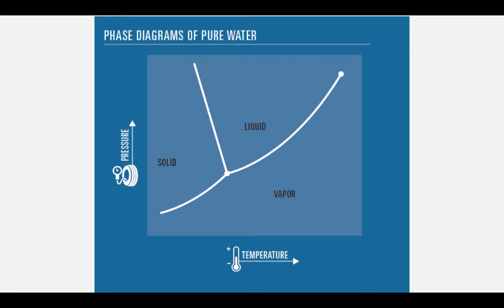Here is a phase diagram of water. Let's start here to discuss how phase diagrams work. All phase diagrams have pressure plotted on the y-axis and temperature plotted on the x-axis. The units of pressure are usually in atmospheres.